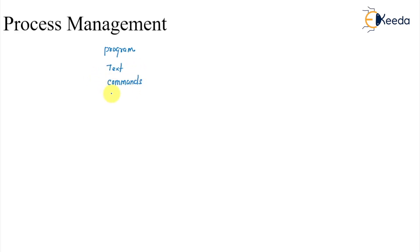When we talk about what exactly a process is, two terms come into the picture. First is a program, which is a text file or a file consisting of commands. It is a passive entity — it is incapable of doing anything on its own. A process, by definition, is a program in execution, and it is also the unit of work in case of the CPU.